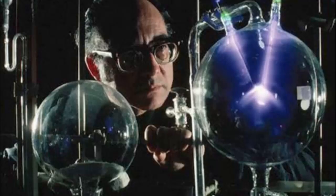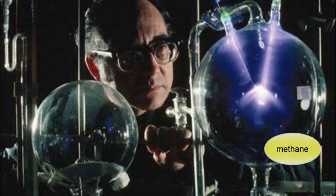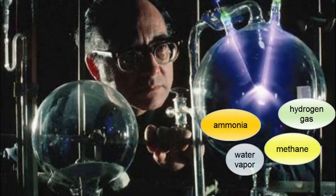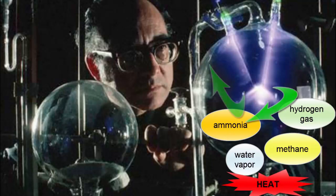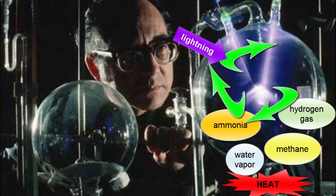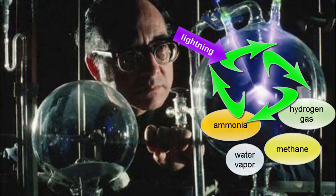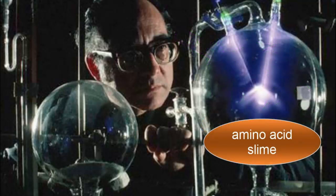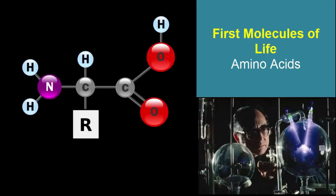One of the first experiments to simulate the formation of the basic molecules of life was done by Stanley Miller as a graduate student at the University of Chicago in the early 1950s. Into a closed system of flasks, Miller put methane, ammonia, hydrogen gas, and water vapor — all materials that would have been major components of early Earth's atmosphere. He warmed a soup of these chemicals, circulated them through a region where they were subjected to electric sparks simulating lightning, and cooled them and returned the products to the soup. Within a few days, the soup was a brown slime that contained amino acids, the building blocks of proteins.